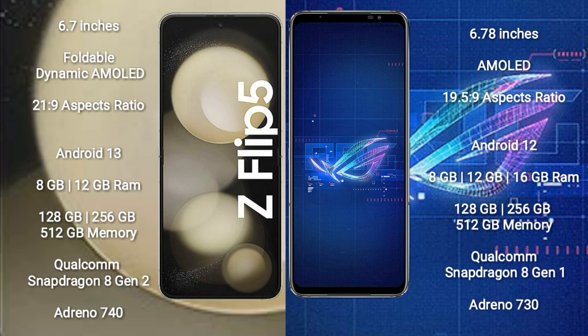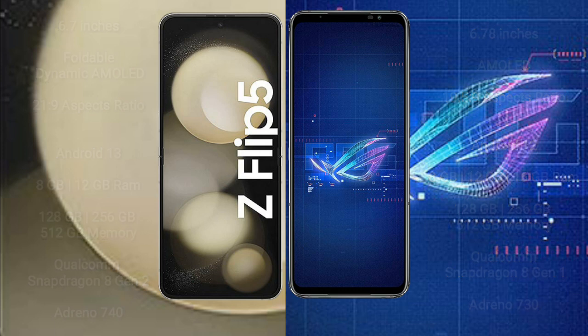Samsung Galaxy Z Flip 5 features the Qualcomm Snapdragon 8 Gen 2 processor and Adreno 740 GPU. Asus ROG Phone 6 comes with 8 GB, 12 GB, or 16 GB RAM and 128 GB, 256 GB, or 512 GB internal storage, with a Qualcomm Snapdragon 8 Gen 1 processor and Adreno 730 GPU.